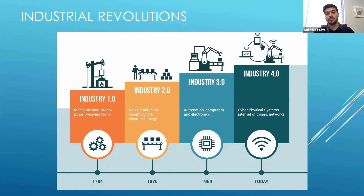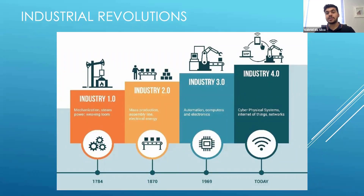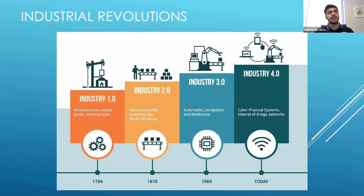The third industrial revolution, more recently in the late 1960s, was where we introduced things like automation, computers, and electronics to actually increase and better industries. The most recent one, which we're currently in, is the fourth industrial revolution. That has introduced things like cyber physical systems and the internet of things, and has focused heavily on networks and the interlinking of different components.